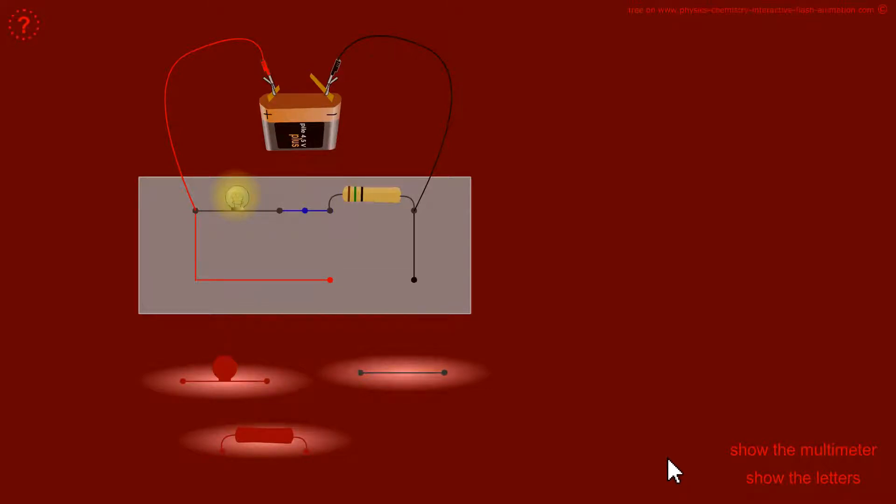Hello, welcome everyone. The measurements that we are going to carry out in this experiment have already been done with two bulbs. The difference here is that there is a bulb and a resistor.